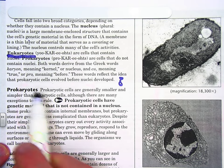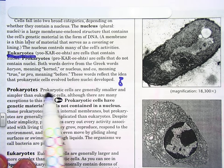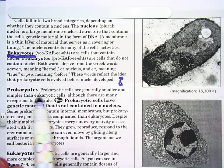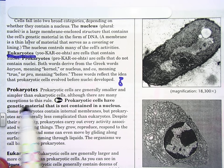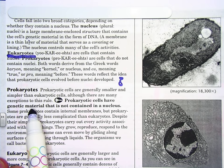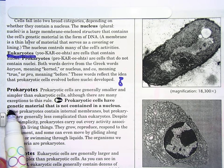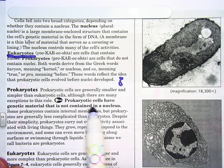Prokaryotic cells are generally smaller and simpler than eukaryotic cells, although there are many exceptions to this rule. Prokaryotic cells have genetic material that is not contained in a nucleus.